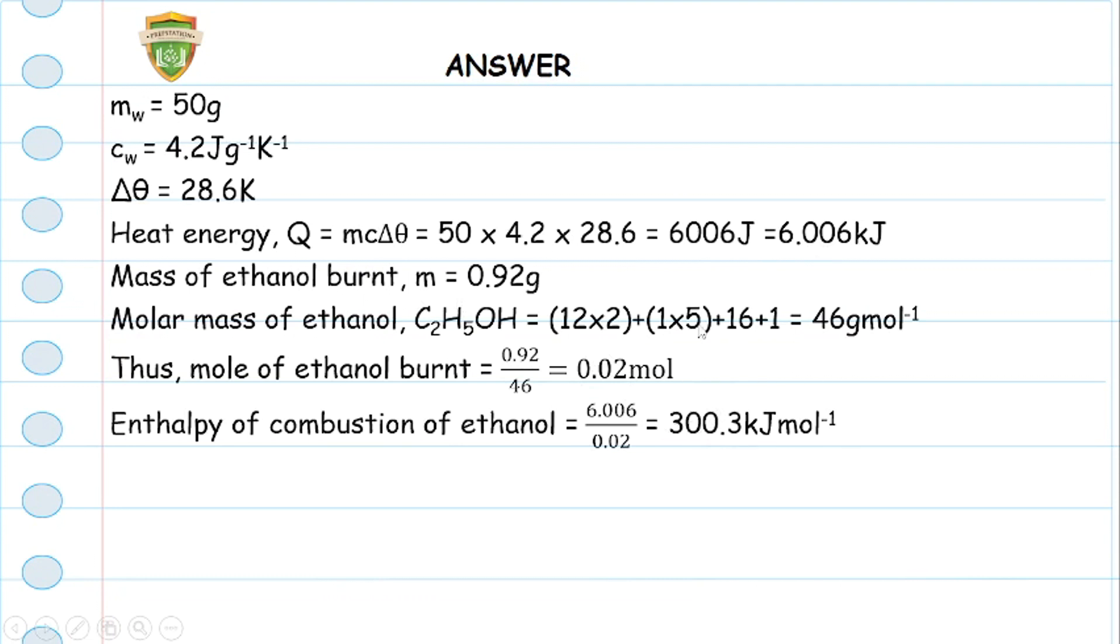To get the enthalpy of combustion of ethanol, we simply divide the heat energy by the mole. The heat energy divided by mole will give us 300.3 kilojoules per mole thereabouts. But we know that combustion is an exothermic reaction, and for exothermic reactions the enthalpy is usually negative, so that brings our answer to be negative 300.3 kilojoules per mole, and that is option C.